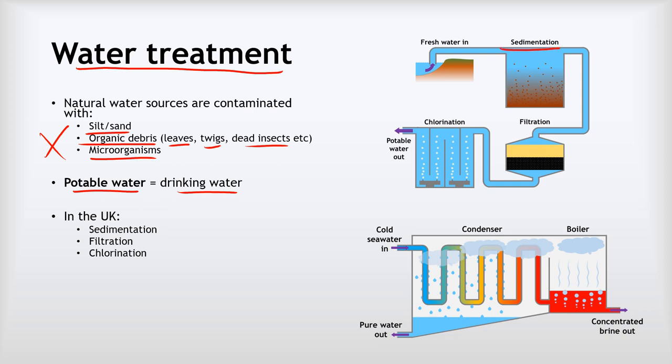In the UK we have a three-step process that involves sedimentation where we let the water settle so that stuff in it can sink to the bottom, then we filter the water to remove smaller particles of matter, and lastly we add chlorine which will kill any microorganisms.